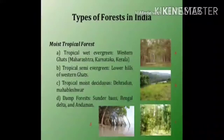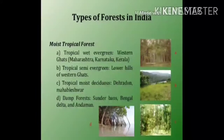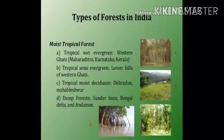The different types of forest in India include: first, tropical wet evergreen forest, present in the Western Ghats covering states like Maharashtra, Karnataka, and Kerala. Second, tropical semi-evergreen forest, present in the lower hills of the Western Ghats. Third, tropical moist deciduous forest, found in areas of Dehradun and Mahabaleshwar. Fourth, damp forest, present in the Sundarbans, Bengal Delta, and Andaman.